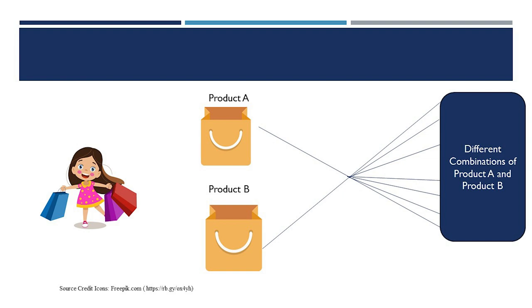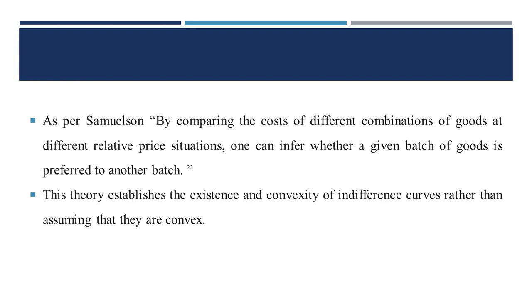By observing how a consumer buys a basket of goods at different prices, one can assess the preferences of the consumer. As per Samuelson, by comparing the cost of different combinations of goods at different relative price situations, one can infer whether a given batch of goods is preferred to another batch.